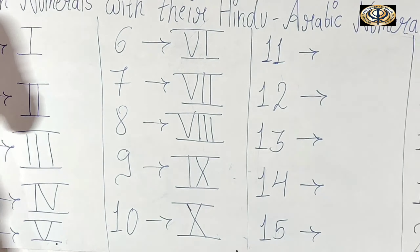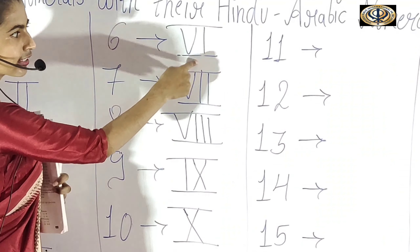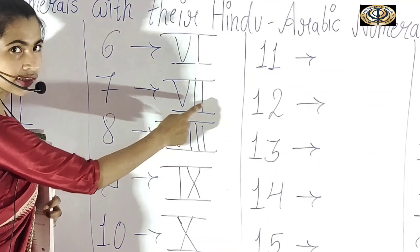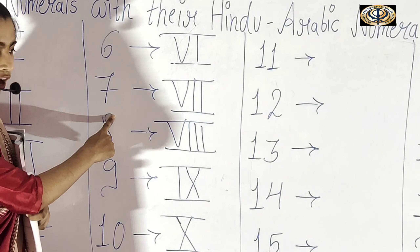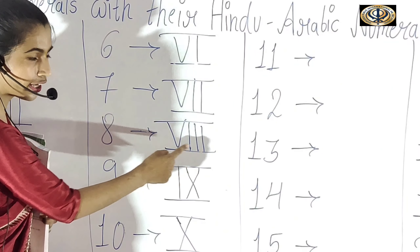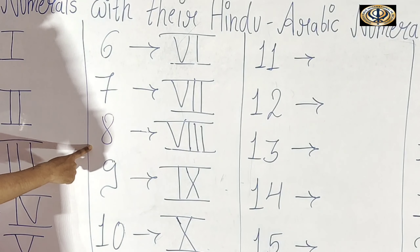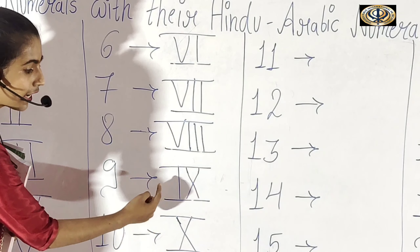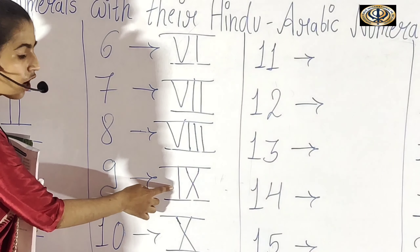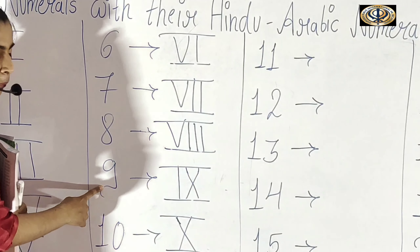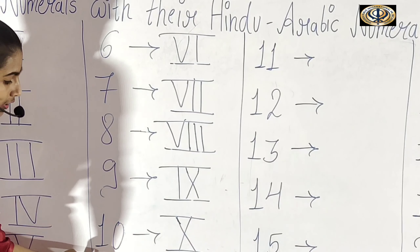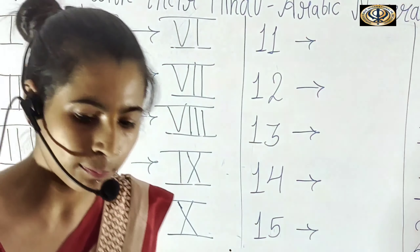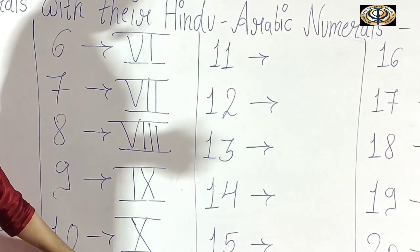So six ka Roman number: V mein one plus karenge to VI. V mein agar two plus karenge to seven ka Roman number VII. V mein plus three karenge to eight ka Roman number VIII. Nine aur ten ka Roman number hamaara X hota hai. Nine ka Roman number IX hota hai aur ten ka Roman number X hota hai.